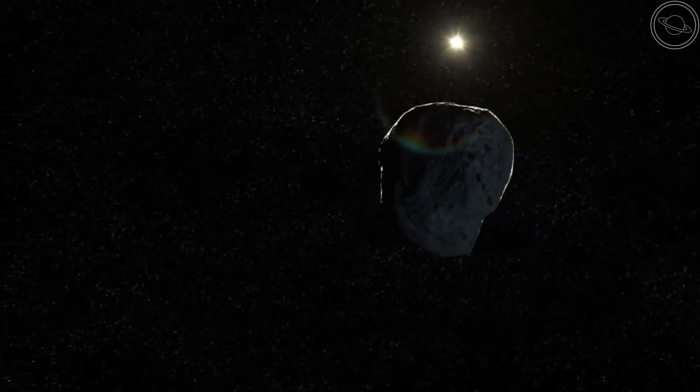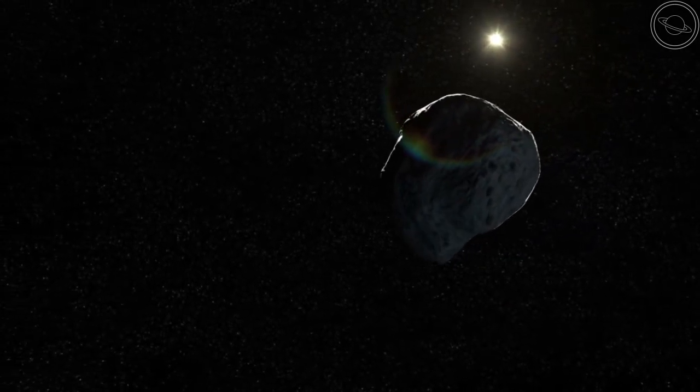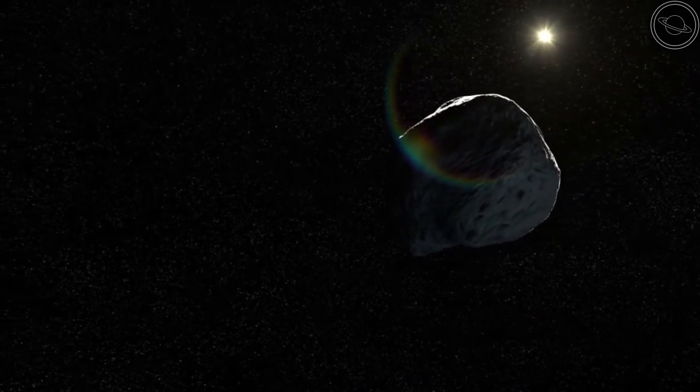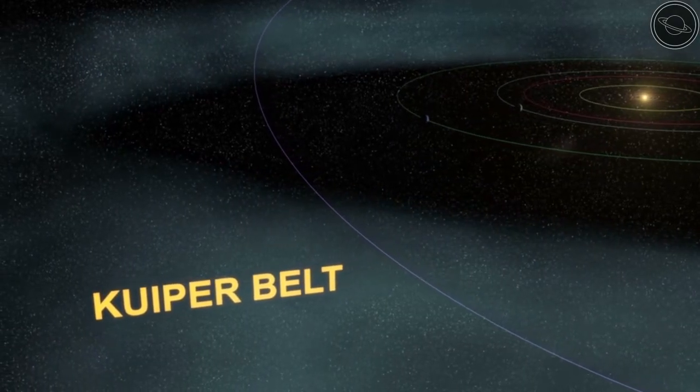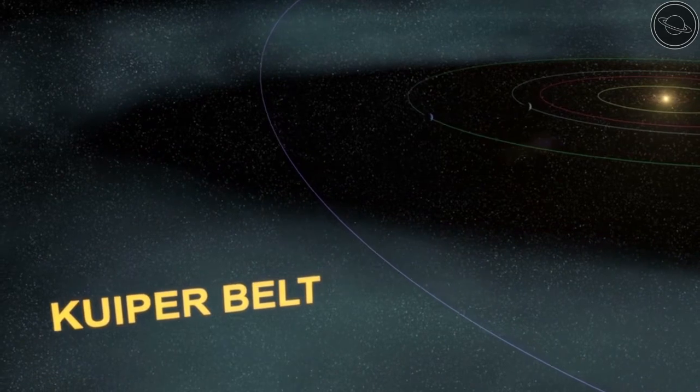The problem of dwarf planets began in the 90s with the discovery of extreme trans-Neptunian objects, also known as ETNOs. These are objects that orbit the sun beyond Neptune and are located in a region known as the Kuiper Belt.